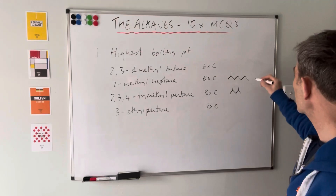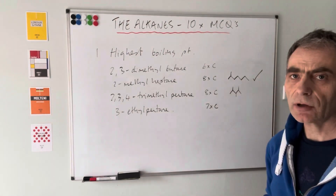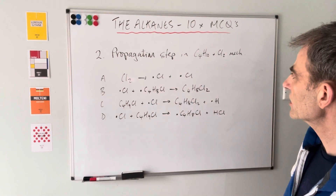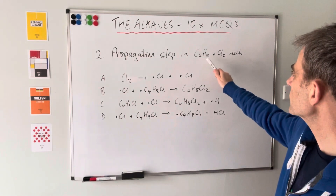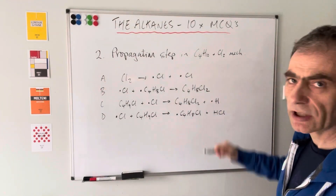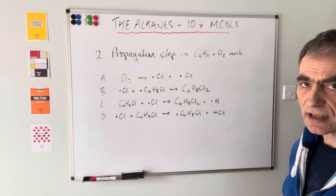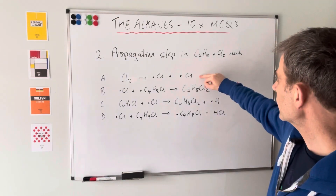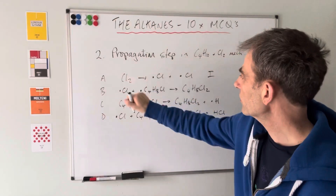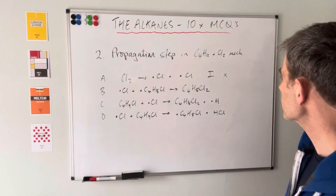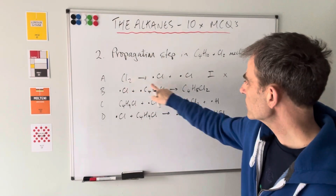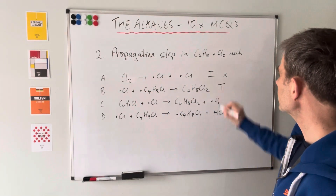Moving on to question two: we had to identify the propagation step that would feature in the radical substitution mechanism between butane and chlorine. The first two options we can rule out straight away because they're not propagation steps at all. The first one is an initiation step - we're going from a stable chlorine molecule to two free radicals. The second is the opposite: going from two radicals to a stable molecule - that's a termination step.